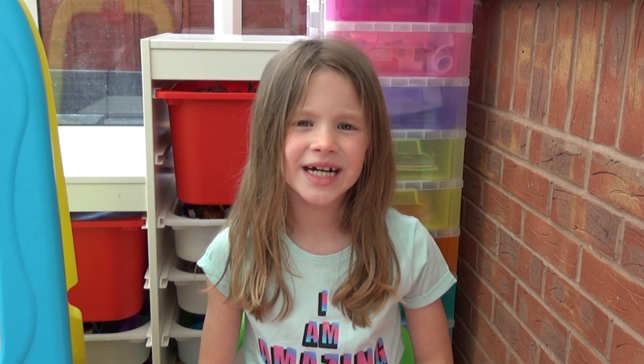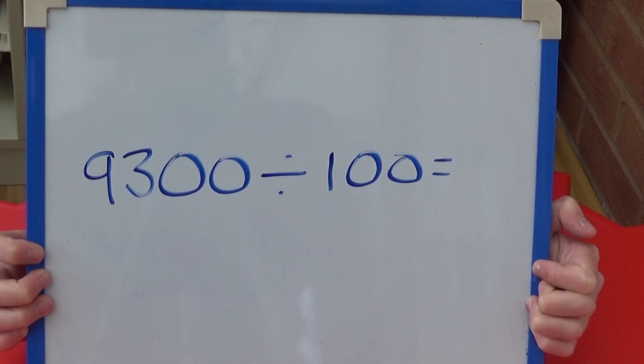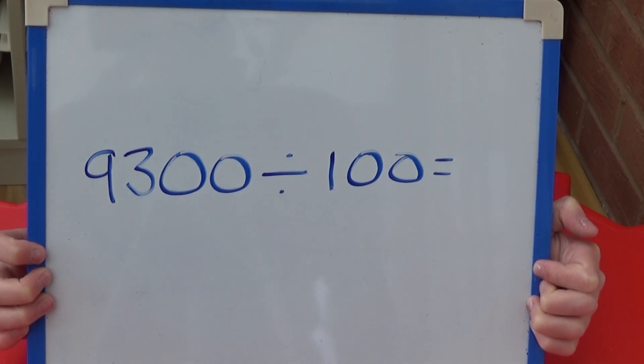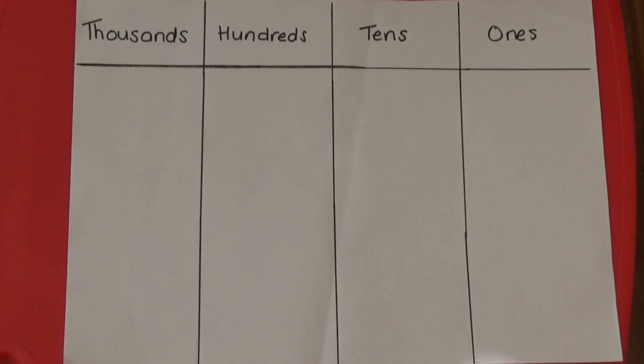This time we're going to look at what happens when you divide a number by 100. Let's look at 9300 divided by 100. I'm going to start by partitioning 9300. 9 is 9000, 3 is 300, and then I need to put zero in the tens and ones columns.